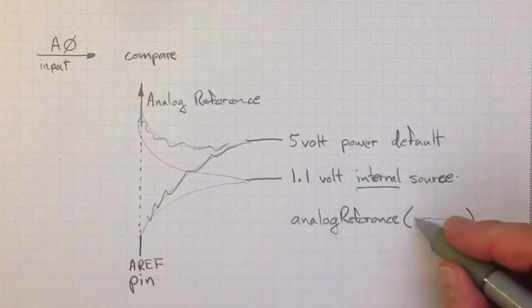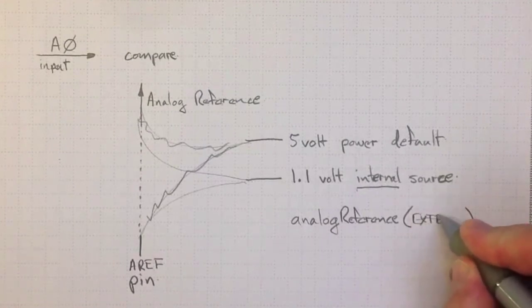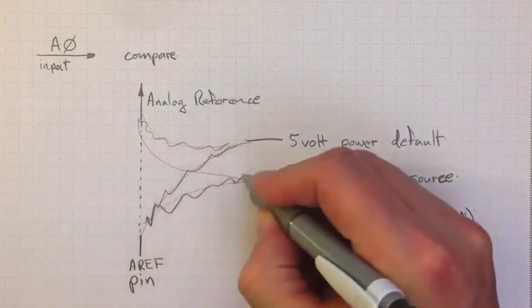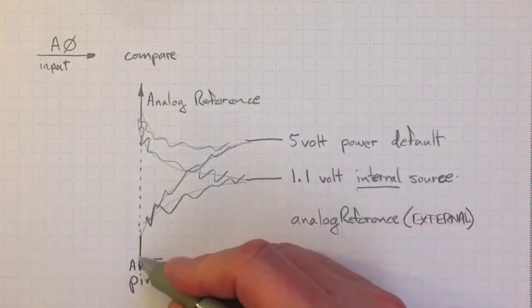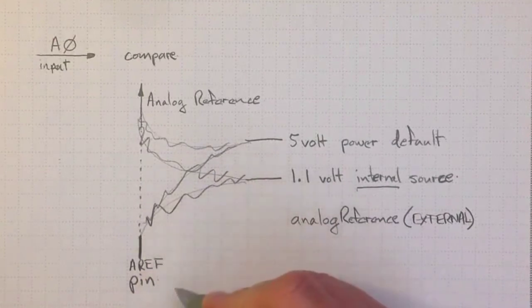On the other hand, if you say analog reference external, then it won't connect anything. No connection to the 5 volt, no connection to the 1.1 volt. It will depend what you connect to the AREF pin.